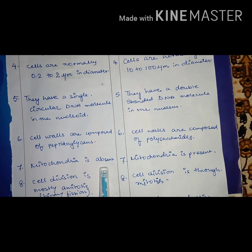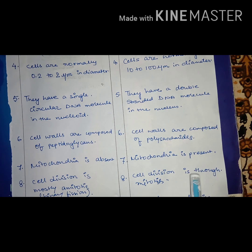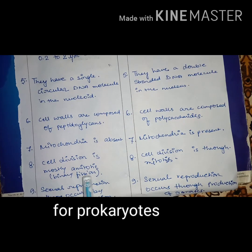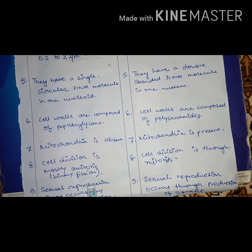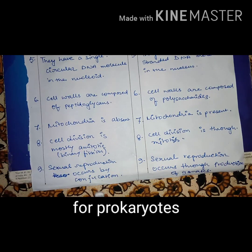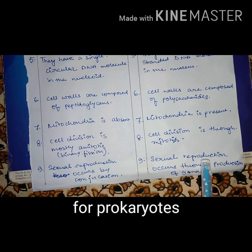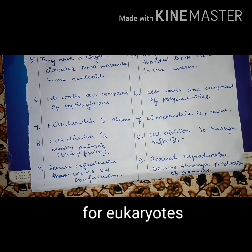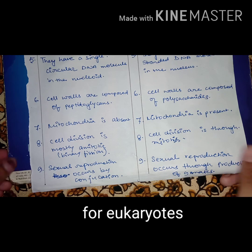Mitochondria is absent in prokaryotes, whereas mitochondria is present in eukaryotes — mitochondria is the powerhouse of the cell. Cell division in prokaryotes is mostly amitotic, for example binary fission, while in eukaryotes cell division is through mitosis. Sexual reproduction in prokaryotes occurs by conjugation, whereas in eukaryotes it occurs through the production of gametes.